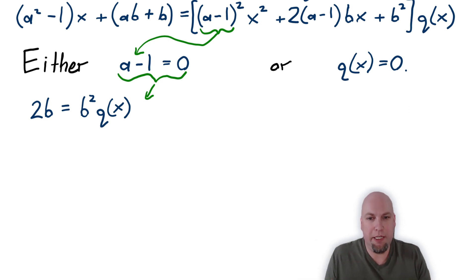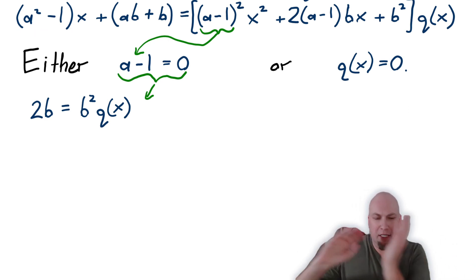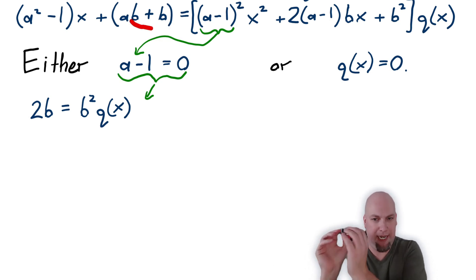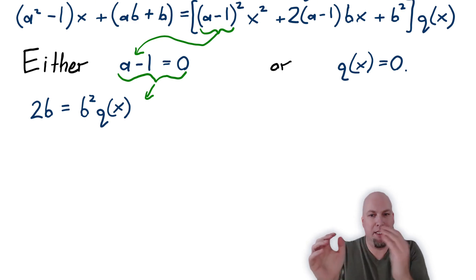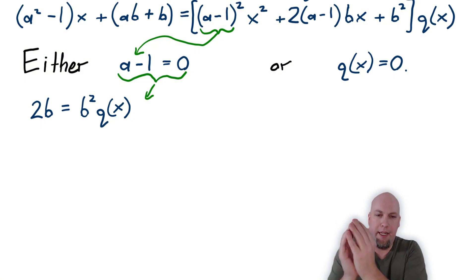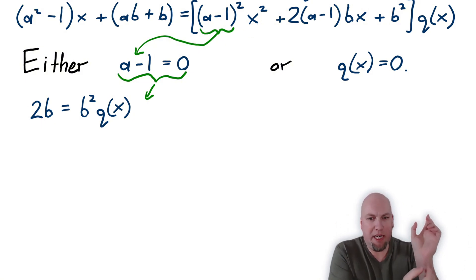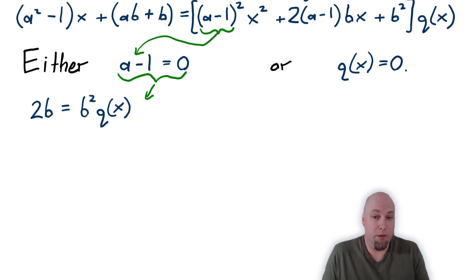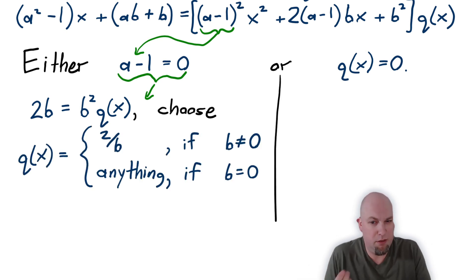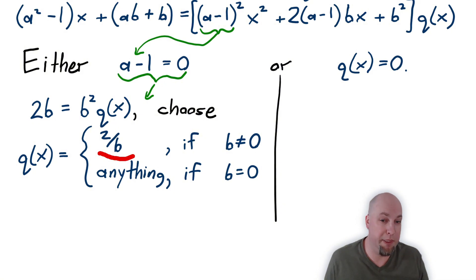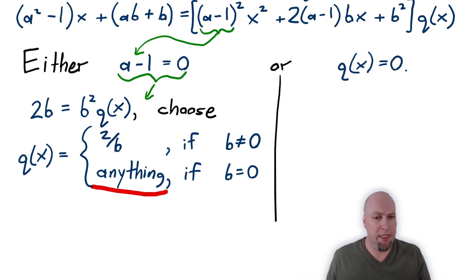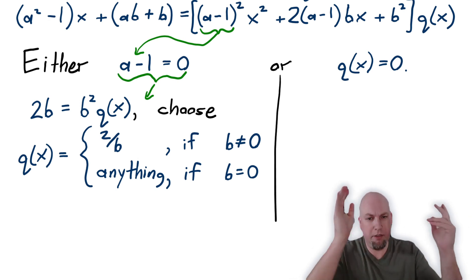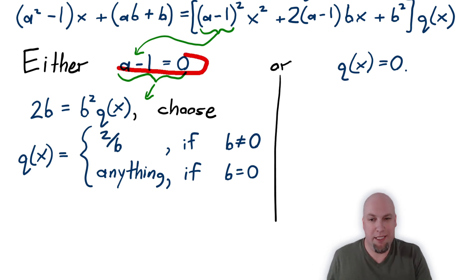In the first case, a minus one equals zero — in other words, a equals one. If you plug that in on the left hand side, the a squared minus one term goes away, and you're left with 2b. On the right hand side, all those (a minus one) factors go away too, leaving just b squared times q(x). Is there always a polynomial q solving that equation? Yes — if b is nonzero, choose q to be the constant polynomial 2/b. If b equals zero, q can be anything. So if a equals one, you have a solution.